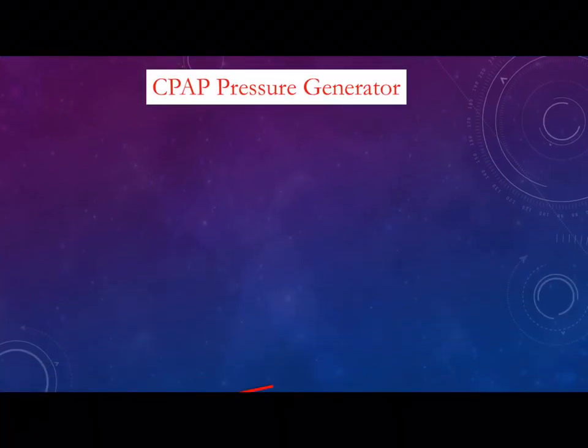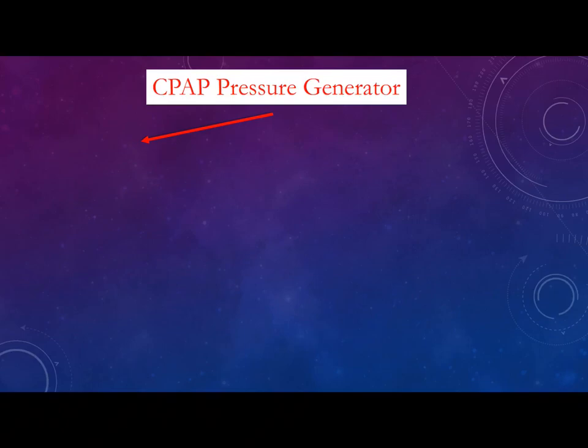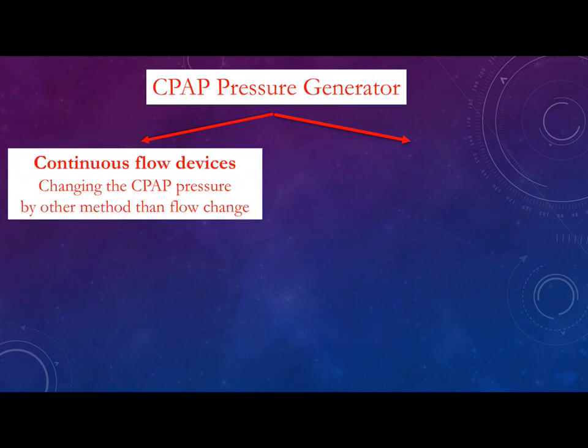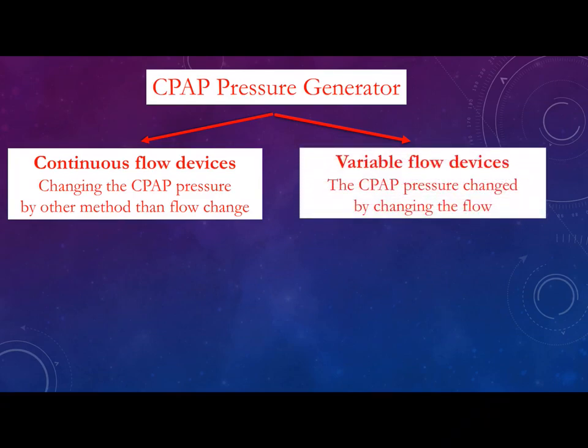The second component is the CPAP pressure generator. According to the method of pressure generation, we have two types of CPAP: continuous flow devices and variable flow devices. In continuous flow, we change the pressure by methods other than flow, so increasing or decreasing flow mostly does not affect the pressure, which remains fixed. In variable flow devices, the CPAP pressure changes by changing the flow — increasing flow increases pressure, and decreasing flow decreases pressure.